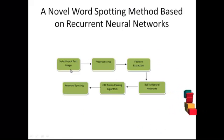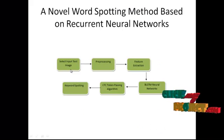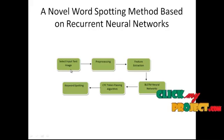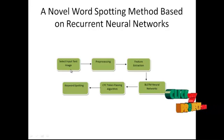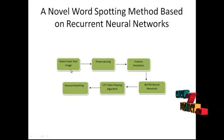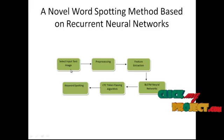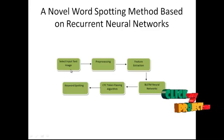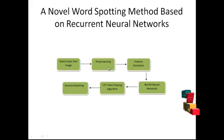In the database used for the experiments, all documents are already segmented into individual text lines. We normalize the input text image as a pre-processing step.